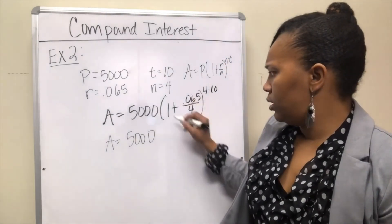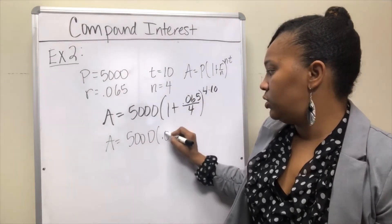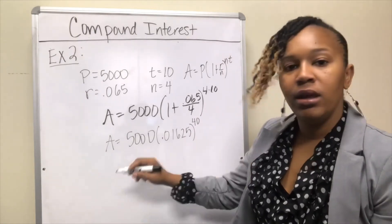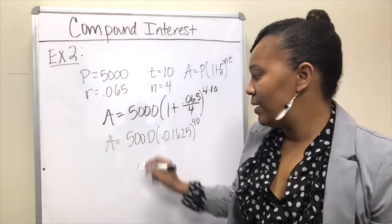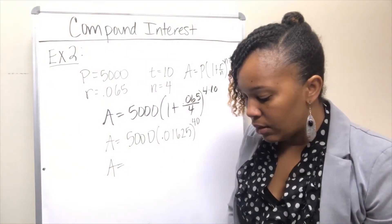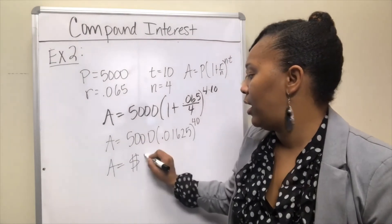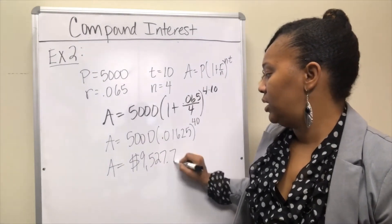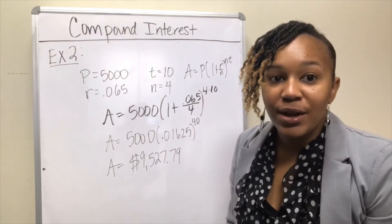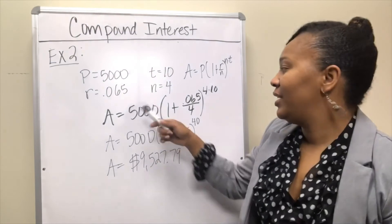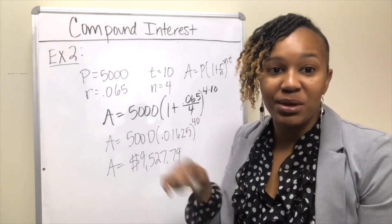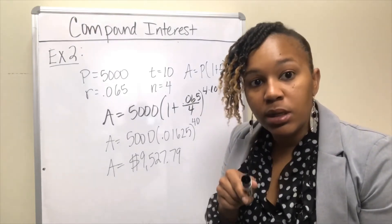If you perform the calculations inside the parentheses, you get 1.01625 raised to the 40th. Plug this in and see what you get. You should actually get $9,527.79. Did you get that right? Hopefully you got it right. If not, go back and plug it in again. See if you can get it. If you have any questions, make sure you put them in the comments. I will respond.